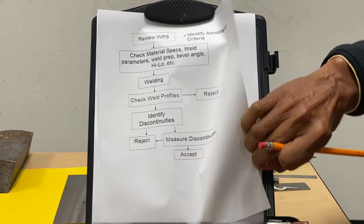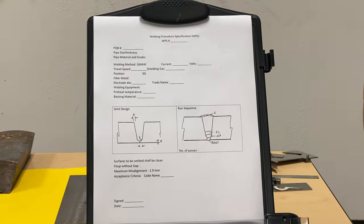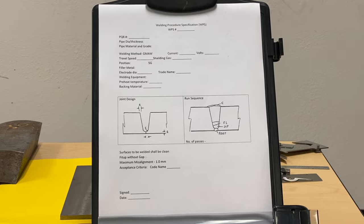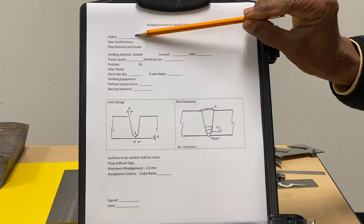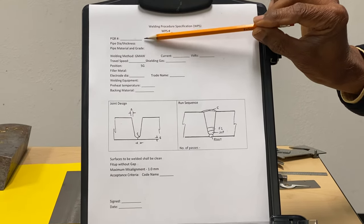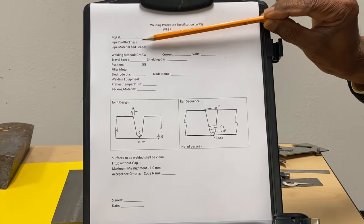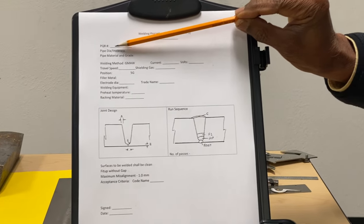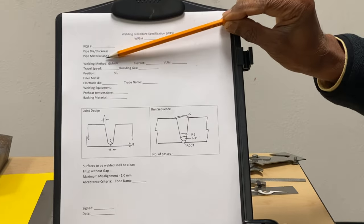Here is the WPS — the welding procedure specification. The WPS will have a number and it will refer to a PQR procedure qualification. This WPS will give you all the specific information for the welding to be carried out, which includes the pipe diameter or plate — in this case it is pipe — the diameter, thickness, pipe material and grade, and the welding method to be used.